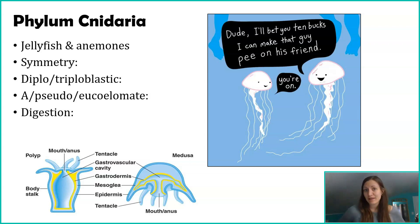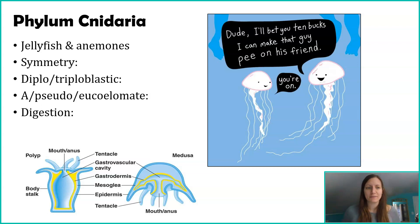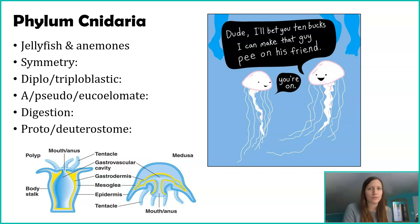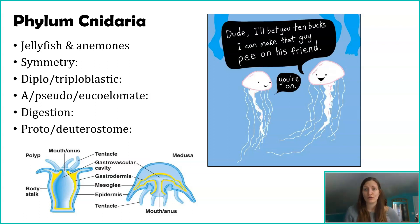These organisms were the example we used for having incomplete digestion, which means they have one opening used both for ingesting food and excreting waste. Because they have incomplete digestion, we can't say whether they're protostomes or deuterostomes — those terms only apply to organisms with complete digestion.